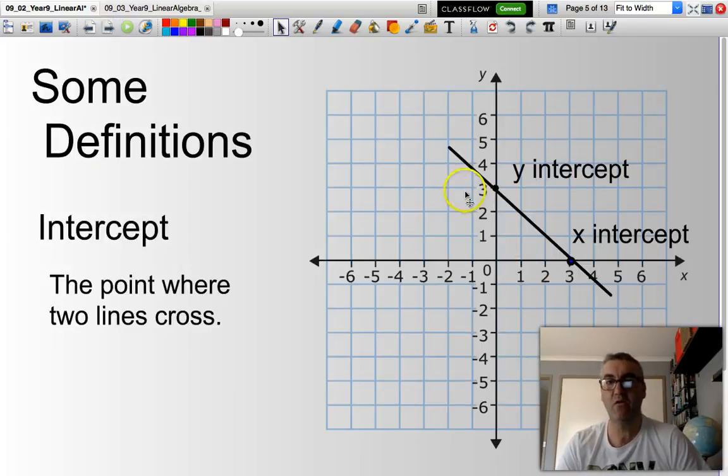Now, where a line cuts either the y-axis or the x-axis on the Cartesian plane is referred to as either the y-intercept or the x-intercept.